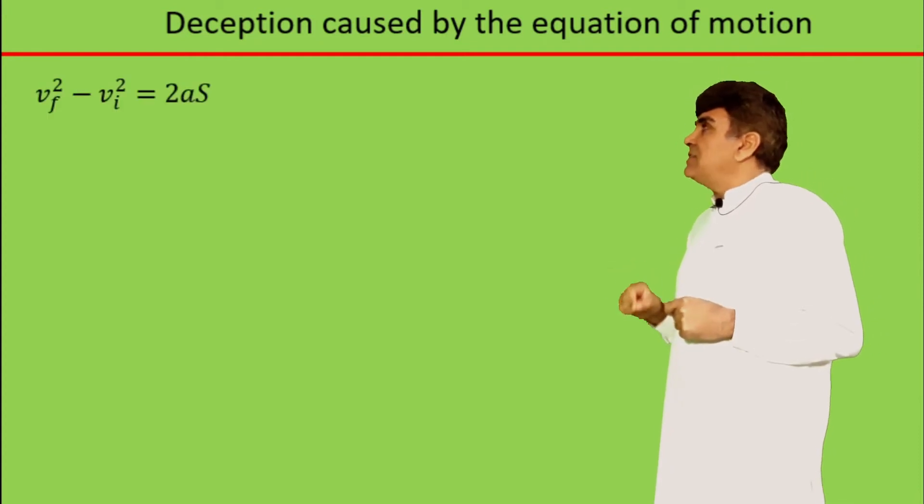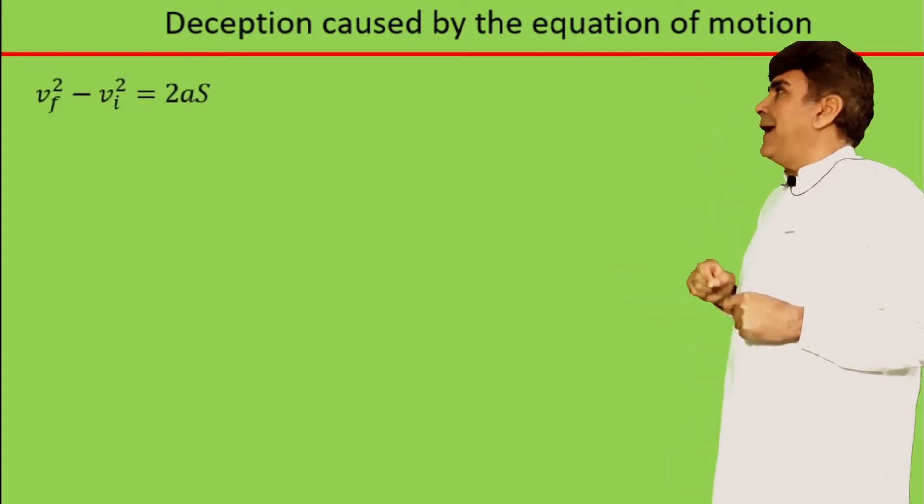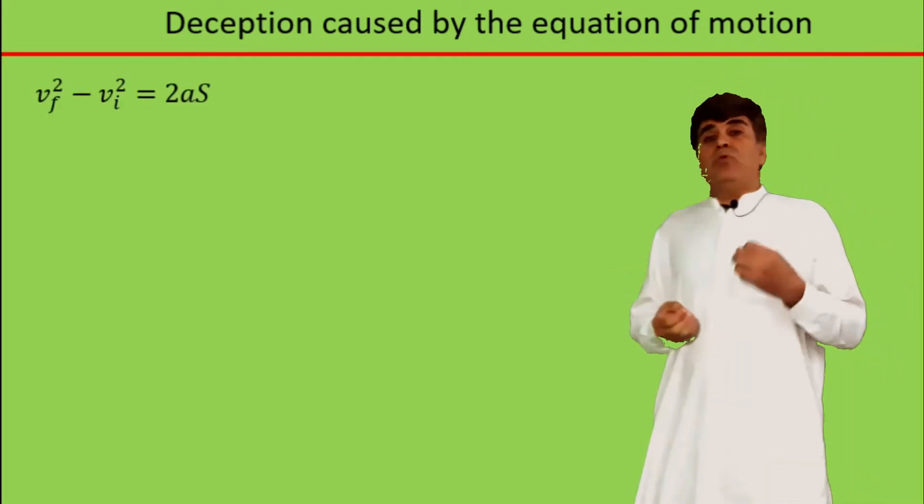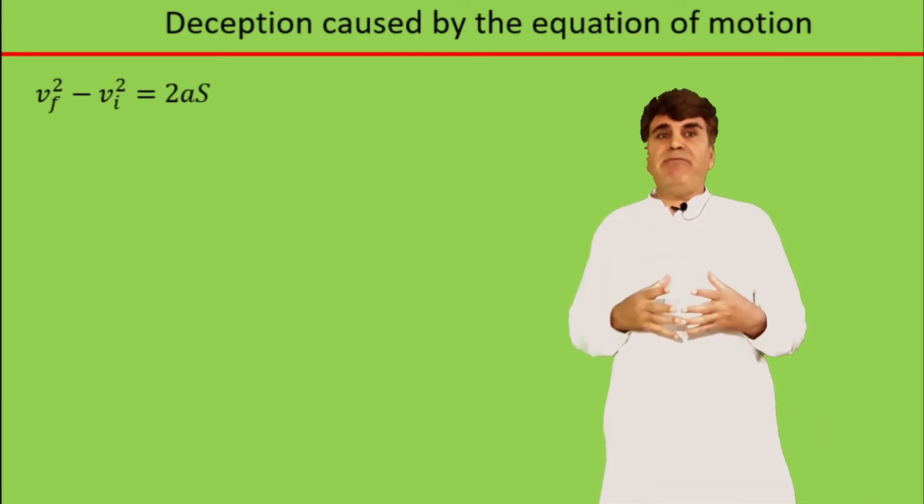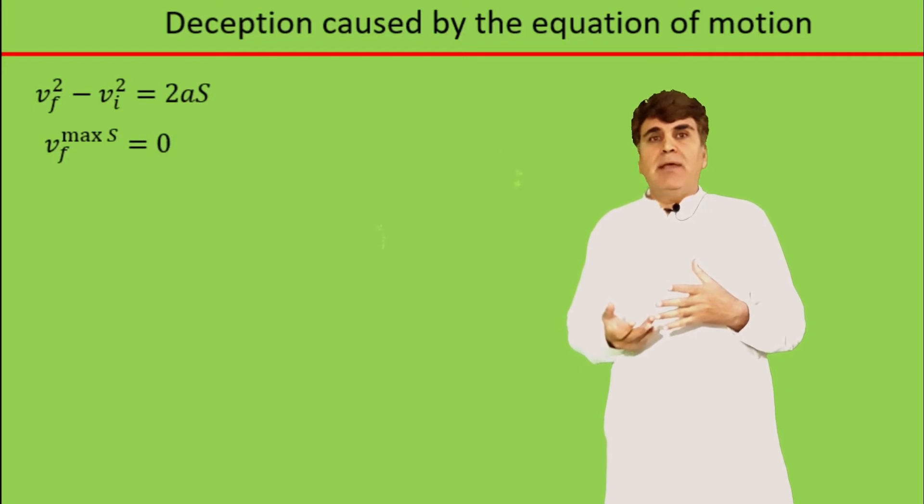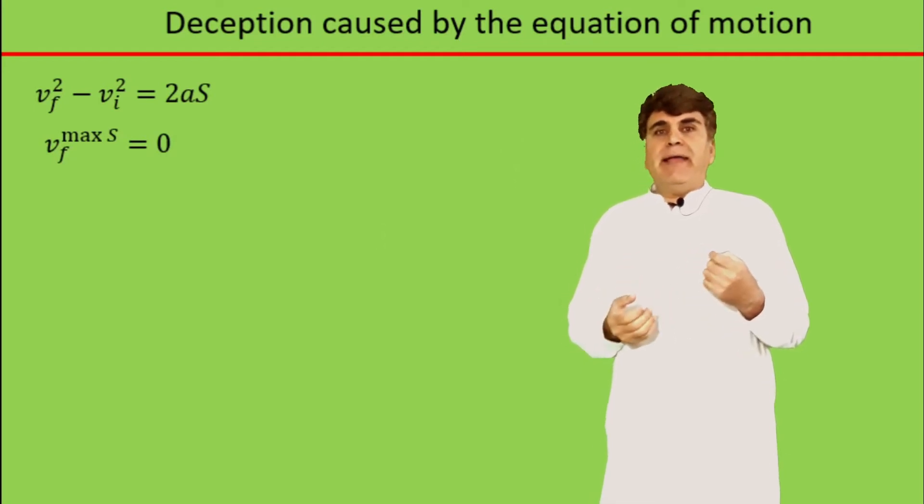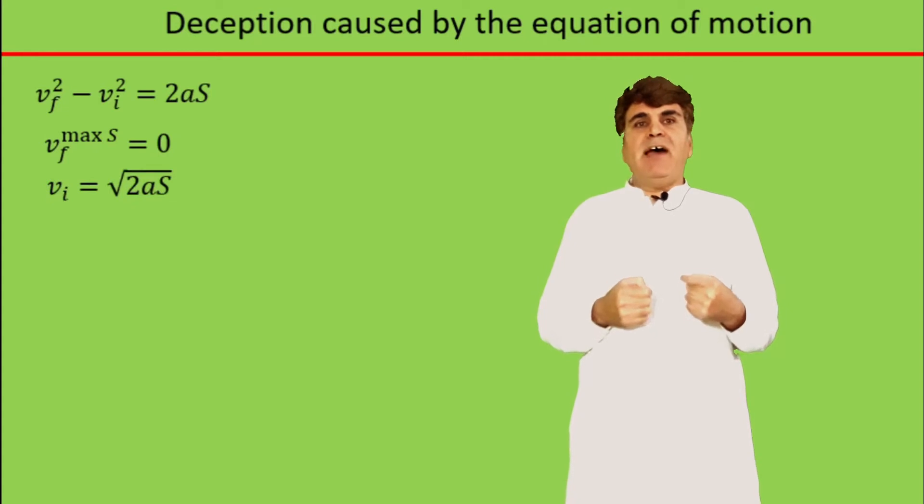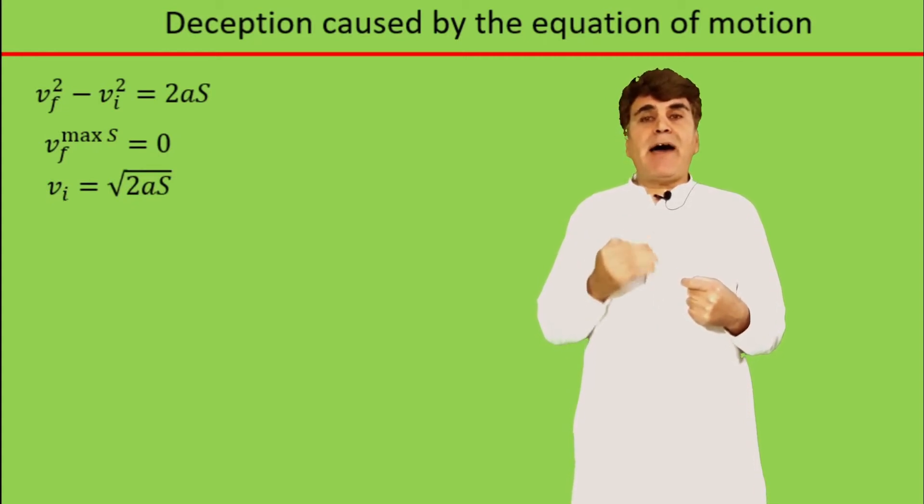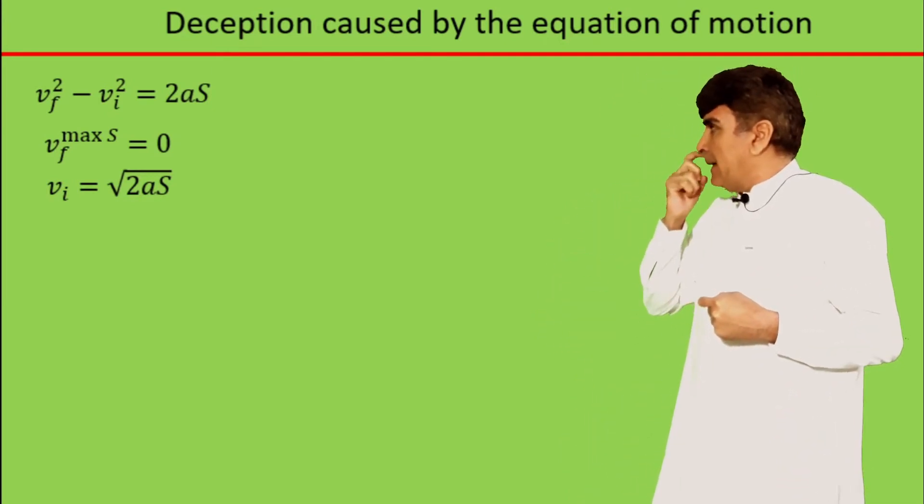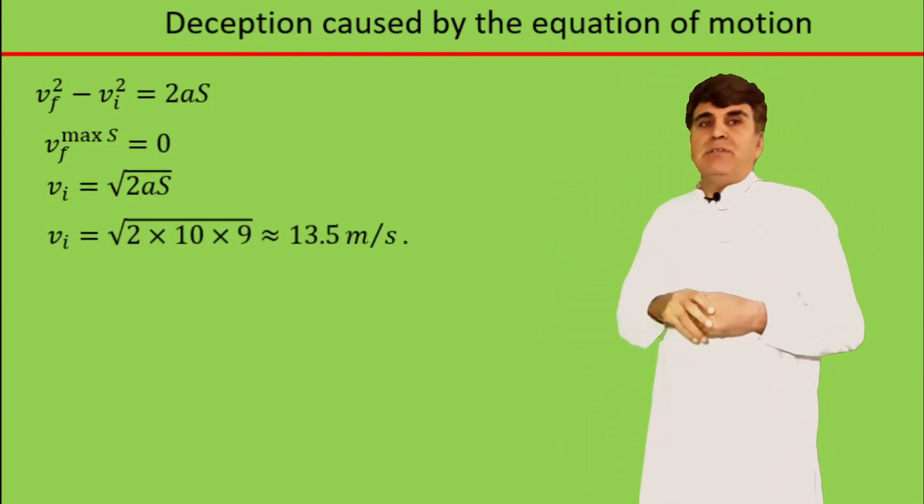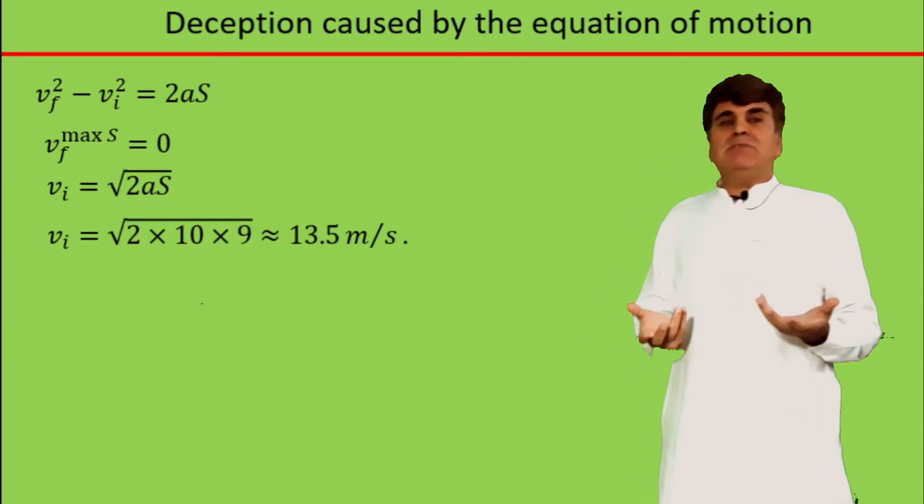That is, VF squared minus VI squared equals 2aS. Since we know at the highest point the final velocity in gravitational field is always 0, ignoring the negative sign for initial velocity, we can write VI for a height of 9 meters as the square root of 2 times 10 times 9, which is equal to 13.5 meters per second.